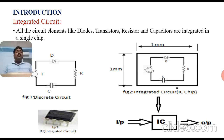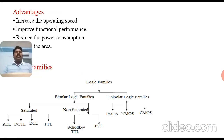Similarly, the speed of the system increases — the operation speed and functionality improves compared to discrete circuits. The cost of the system also decreases, and power consumption is reduced. Advantages of integrated circuits: increase the operating speed, improve the functional performance, reduce the power consumption, reduce the size and area, and decrease the cost of the system. These are the major parameters considered for the implementation of integrated circuits for future technologies.